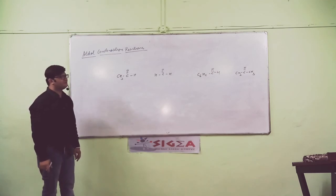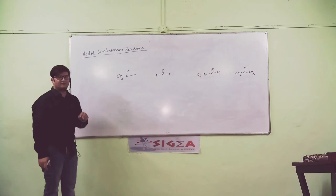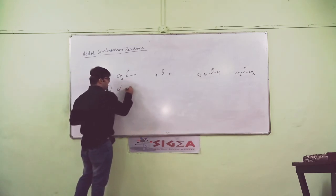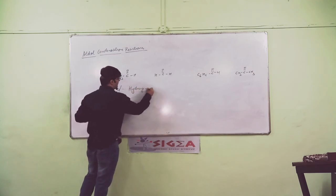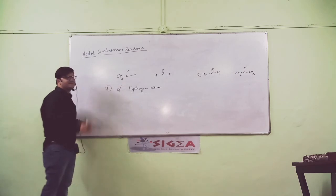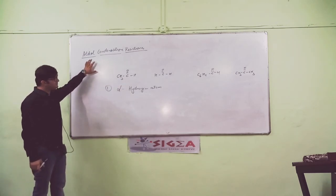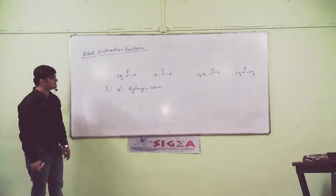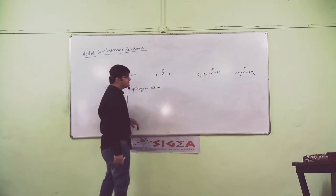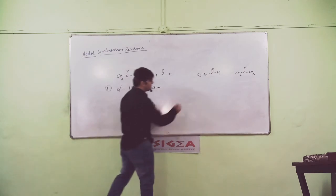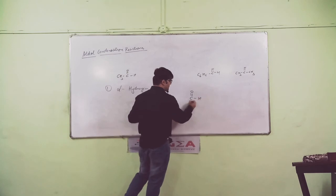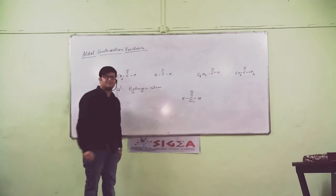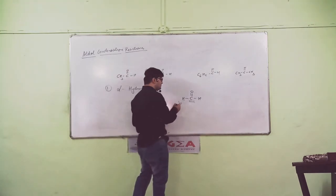The first and foremost condition necessary for a compound to show Aldol reaction: the compound must have alpha hydrogen atom. If we have the functional group with a carbonyl, and there is a carbon atom attached, you will be able to get alpha hydrogen.